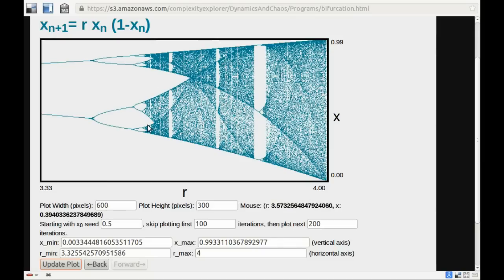So we have period doublings, and then we have these regions here where there's a more or less dense wall of points, and those are aperiodic orbits. They're chaotic.